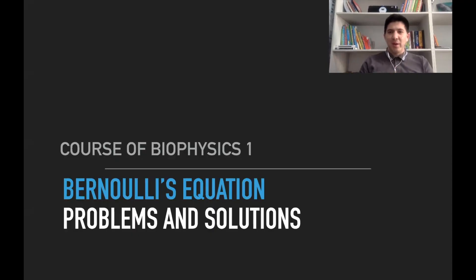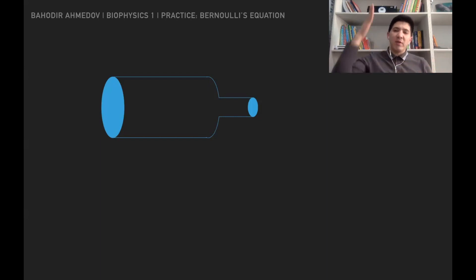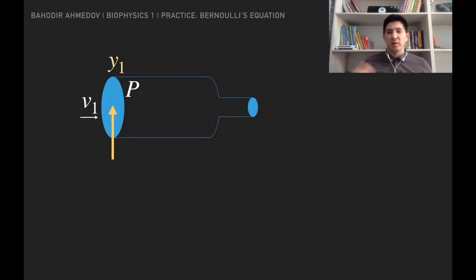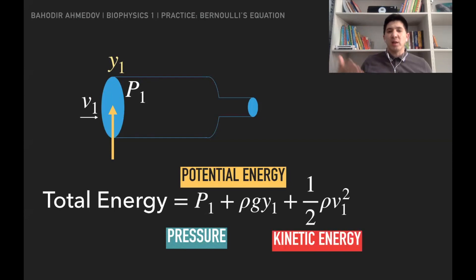Hi, welcome to the course of biophysics one. In this lecture we're going to discuss problems and solutions related to Bernoulli's equation. If you have a pipe with a fluid flowing inside, the total energy of the fluid depends on three things: the height of the fluid, the pressure of the fluid at that point, and the velocity. The total energy is the sum of pressure, potential energy, and kinetic energy.